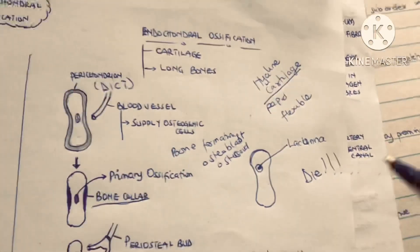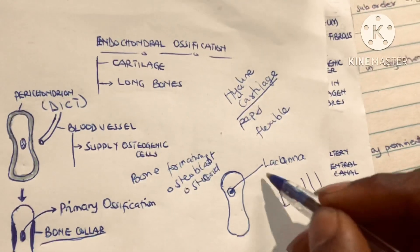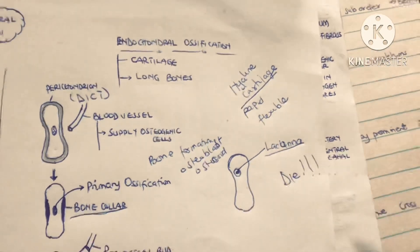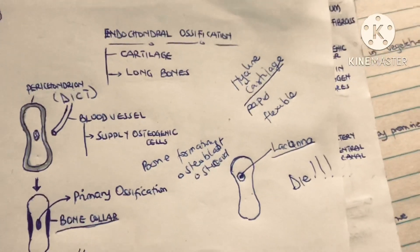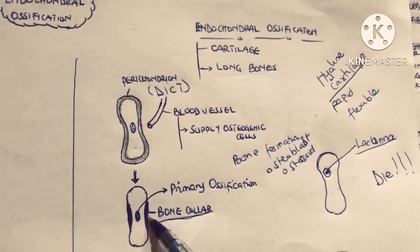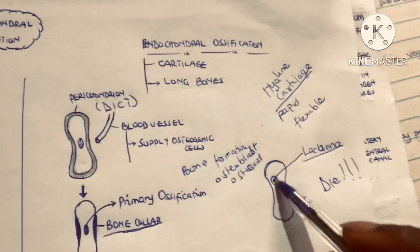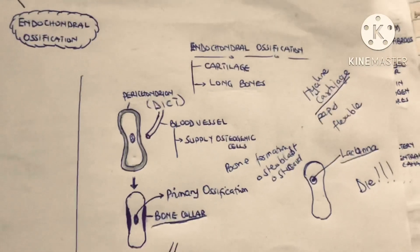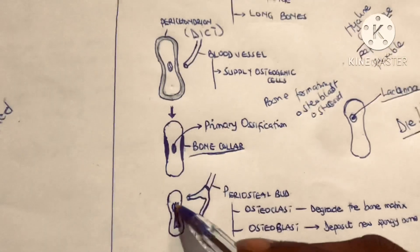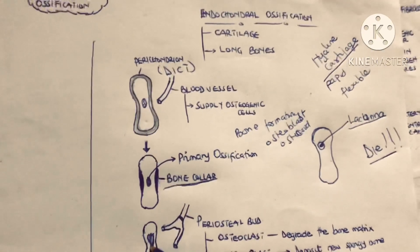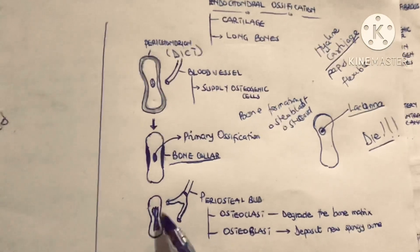Inside the cartilage are cells called chondrocytes, which sit in spaces called lacunae. Initially they were supplied with nutrients by blood vessels, but now the bone collar stops the supply of nutrients to the chondrocytes. The chondrocytes stop receiving nutrients, and as a result they will die. When they die, they expand and become calcified.